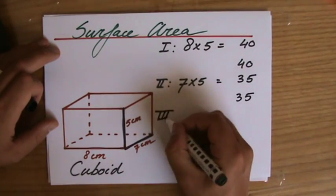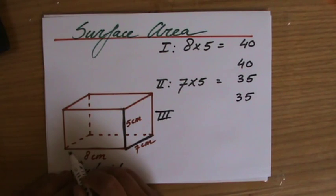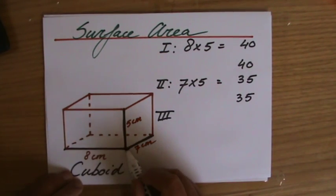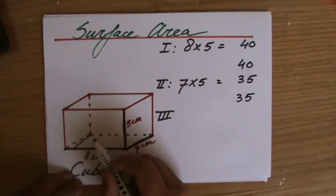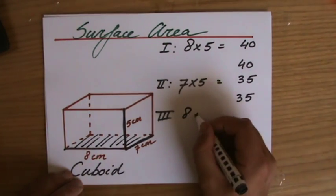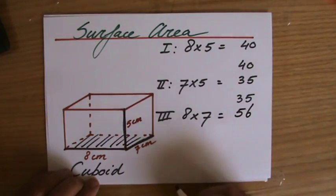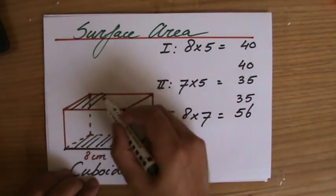And then finally, I have the bottom and the top which are also rectangles of 8 times 7, and that's the area of the bottom. 8 times 7 and that equals 56, and I have the same area at the top, also 56.